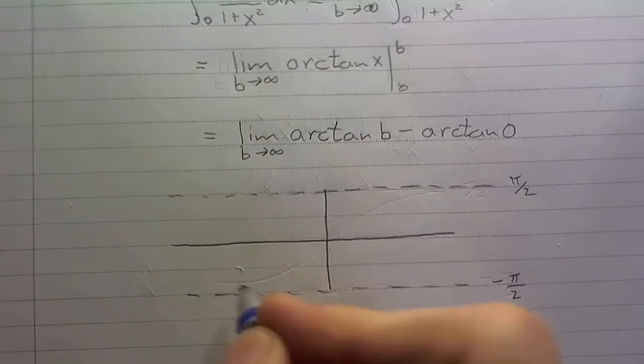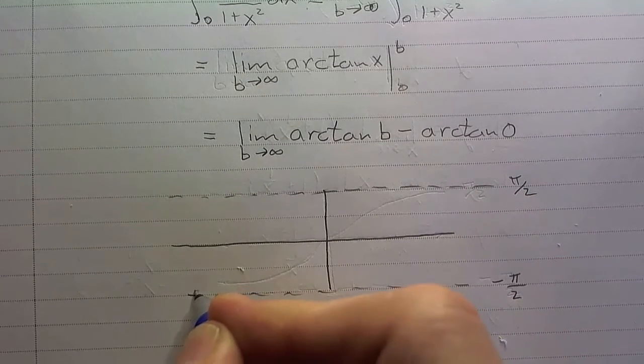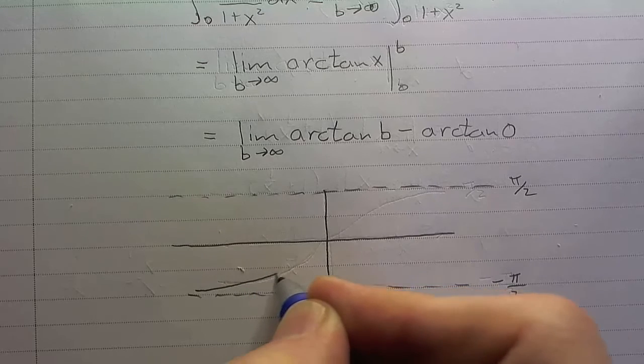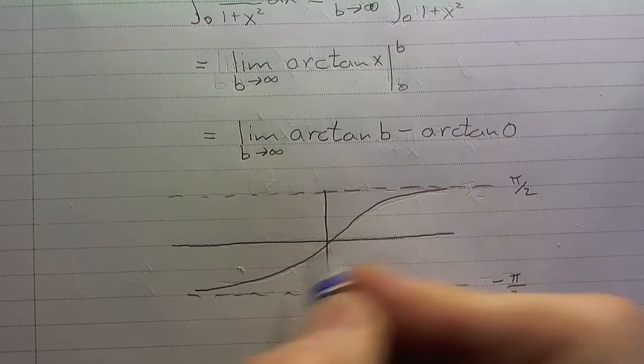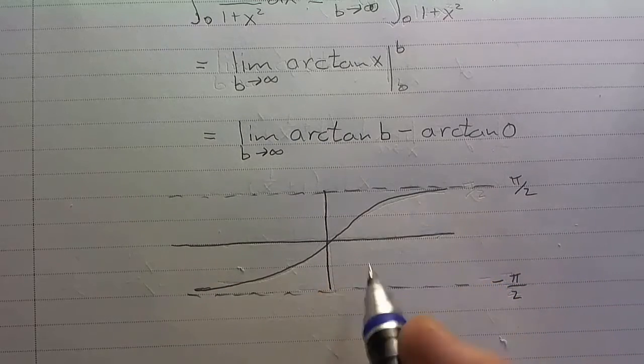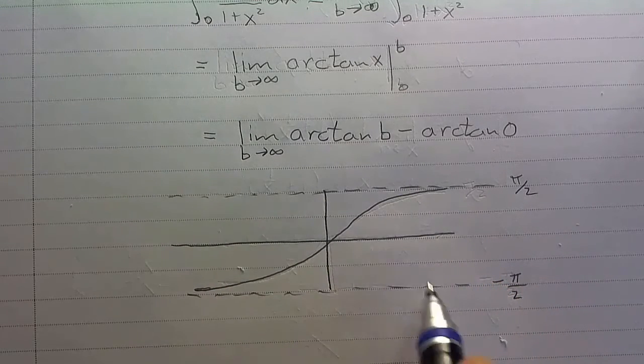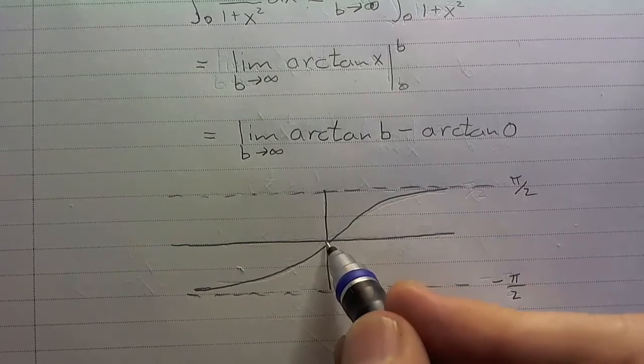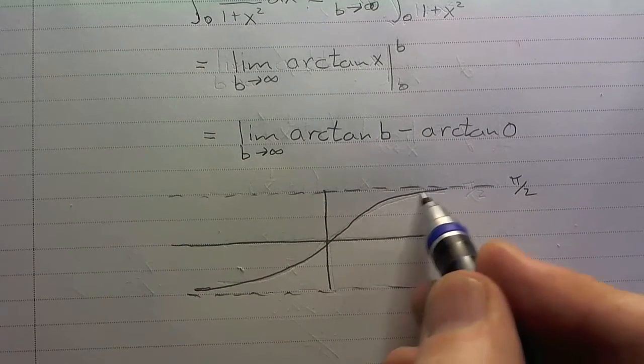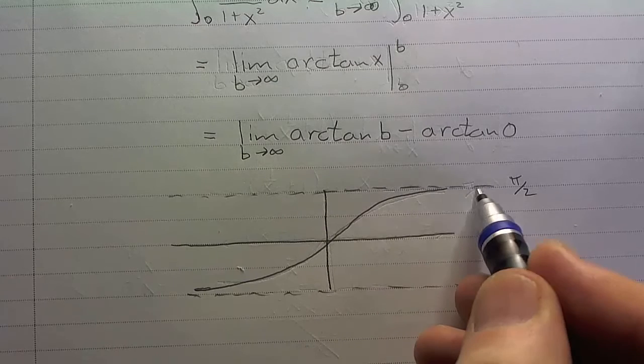Now, if you recall the graph – so it's asymptotic at the pi over 2. It comes up here and is asymptotic at this pi over 2. So as x goes to negative infinity, the arctan is asymptotic to negative pi over 2. And as you go to positive infinity, the asymptote is pi over 2.